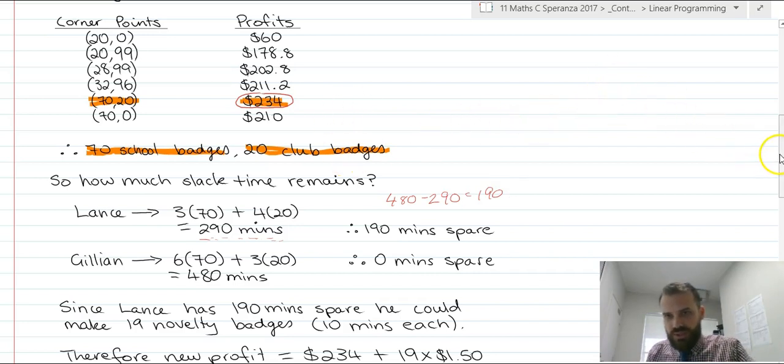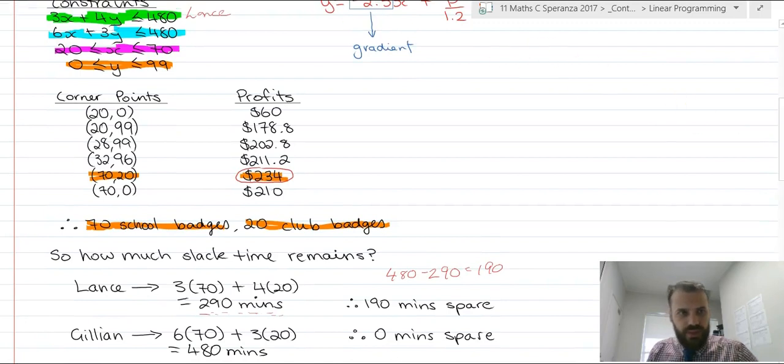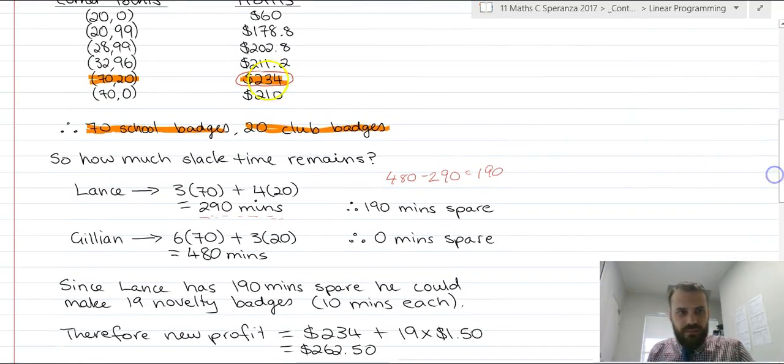Now, we can do the same with Julian. 6X plus 3Y is less than 480. Now, if we put in our maximum point, we can see that 480, that's a full day's work. Julian is working flat out. She has zero minutes to spare. 480 minus 480 is zero. She has zero minutes to spare. So she's not going to make any novelty badges.